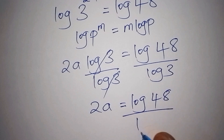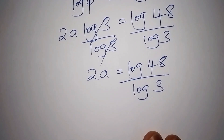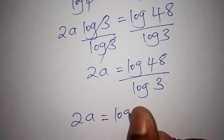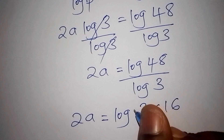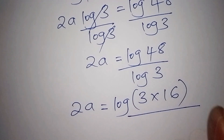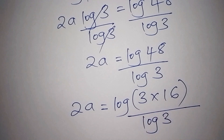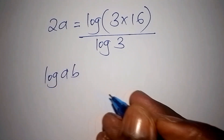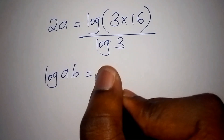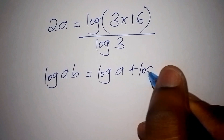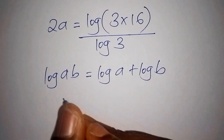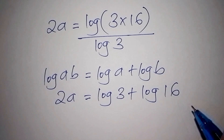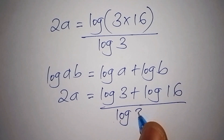We can simplify further by writing 48 as 3 multiplied by 16. So 2a equals log of (3 × 16) all over log of 3. Using the logarithm product rule — log of a·b equals log a plus log b — we rewrite this as 2a equals log 3 plus log 16, all divided by log 3.